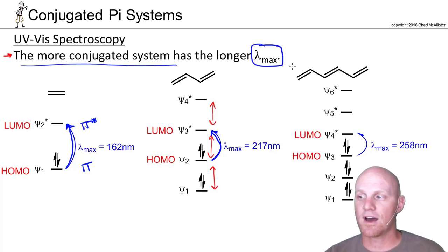That's why for 1,3,5-hexatriene, it's got a lambda max of 258 nanometers, whereas for 1,3-butadiene, it's only 217, and for ethylene with no conjugation, it's 162 nanometers.